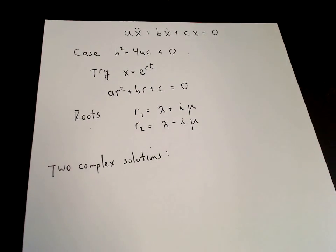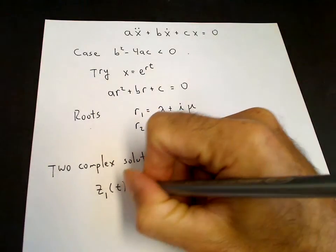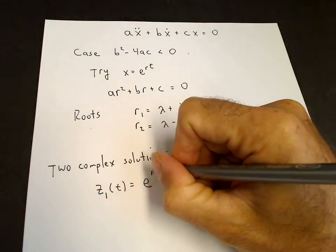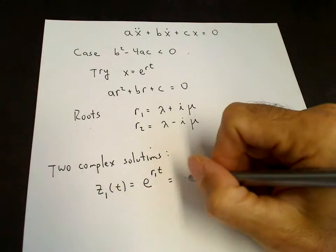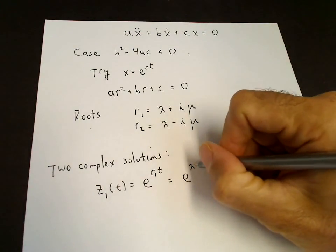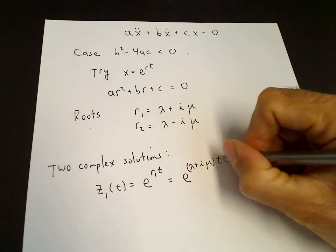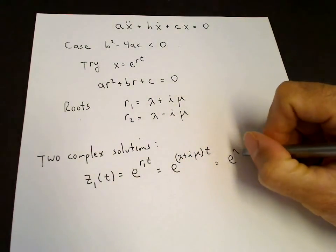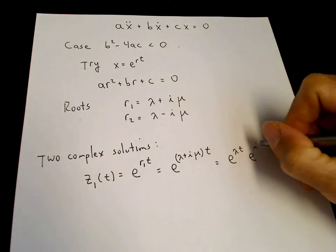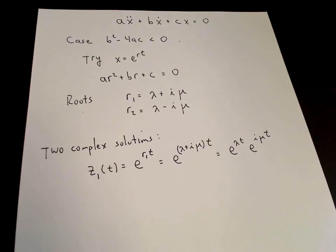We have e to the r1t — since it's complex, we'll call that z1, which is e to the r1t. E to the r1t is e to the lambda plus i mu times t. Lambda and mu are real, so we can write that as e to the lambda t times e to the i mu t — a real exponential and a complex exponential.